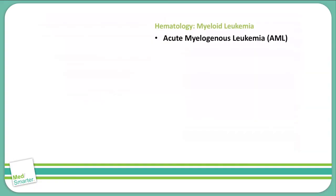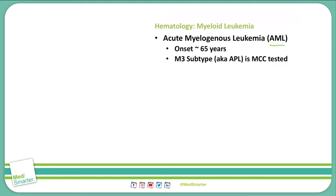Let's look at the myeloid leukemias. The first one we'll talk about is acute myelogenous leukemia, or AML. AML typically shows up at around 65 years of age or older. The most common subtype tested on the USMLE is the M3 subtype. More recently, the naming system has changed, so you might see this as APL, or acute promyelocytic leukemia. M3 and APL are the same thing — they are interchangeable.